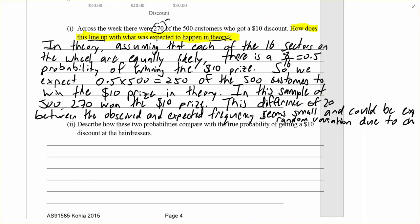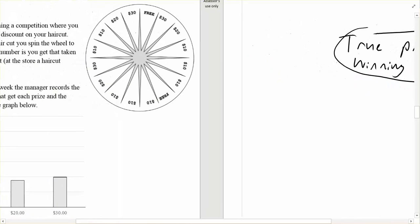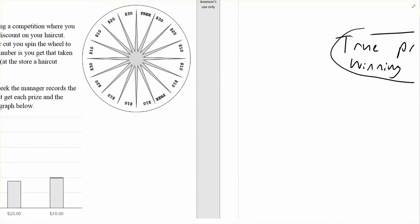Part 2: describe how these two probabilities compare with the true probability of getting a $10 discount at the hairdressers. Well, what's the true probability? The true probability is the actual probability of it happening and we don't actually know what it is. The true probability of winning the $10 prize is unknown, and it could be influenced by a few things. Firstly, we'd expect it to be influenced by how many sectors have $10 on them.